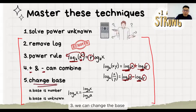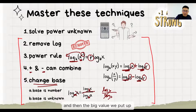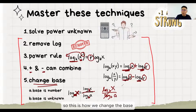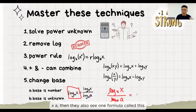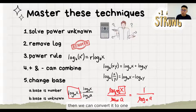Three, we can change the base. Let's say it's base A, but we'll change it to base B. First step: up and down, you write the same base that you want to change it to. The big value goes up, and the small base goes down. Some students ask me if they want to change base to log base X, they also see one formula. Actually, no need to memorize that formula, because as long as the base and the number here is exactly the same, then we can convert it to one.